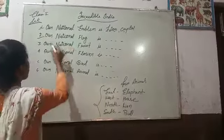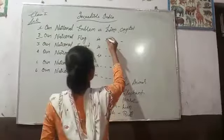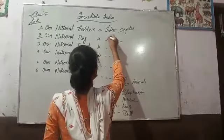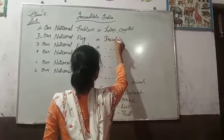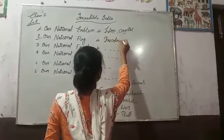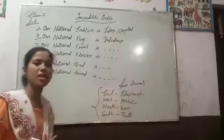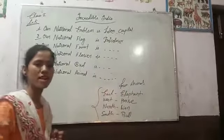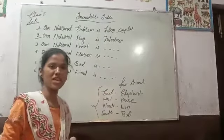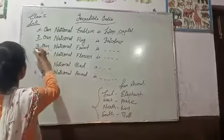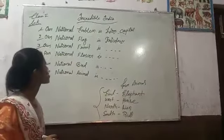Second, our national flag has three colors: saffron, white, and green.